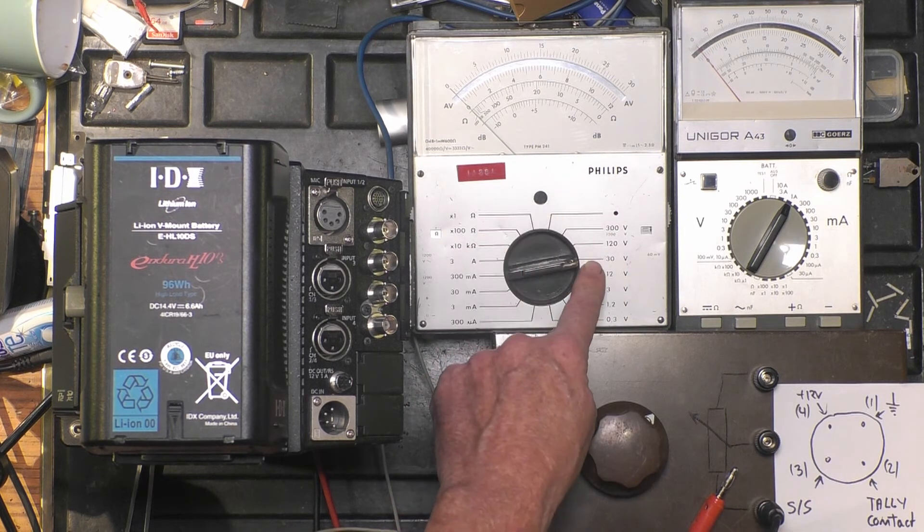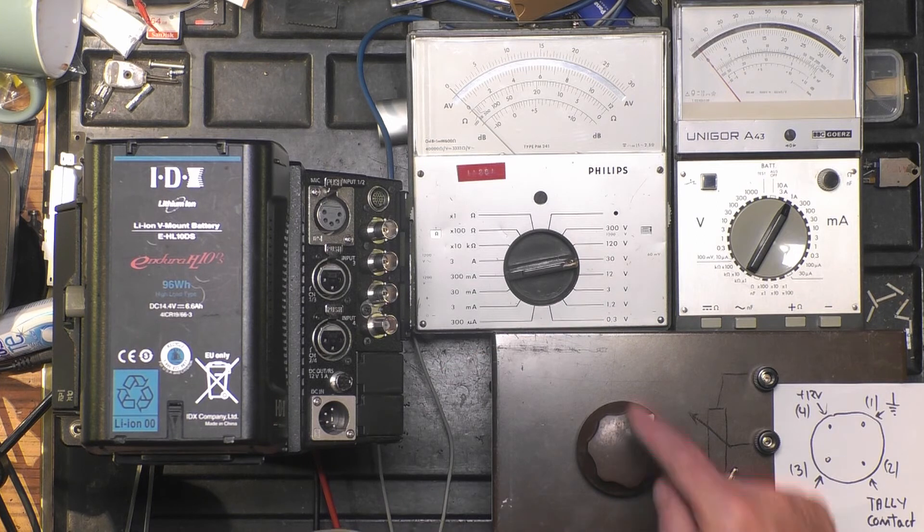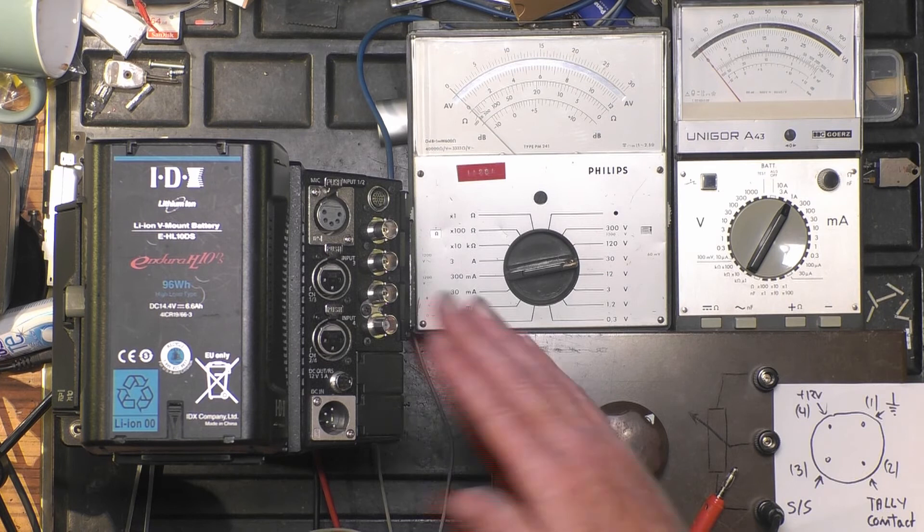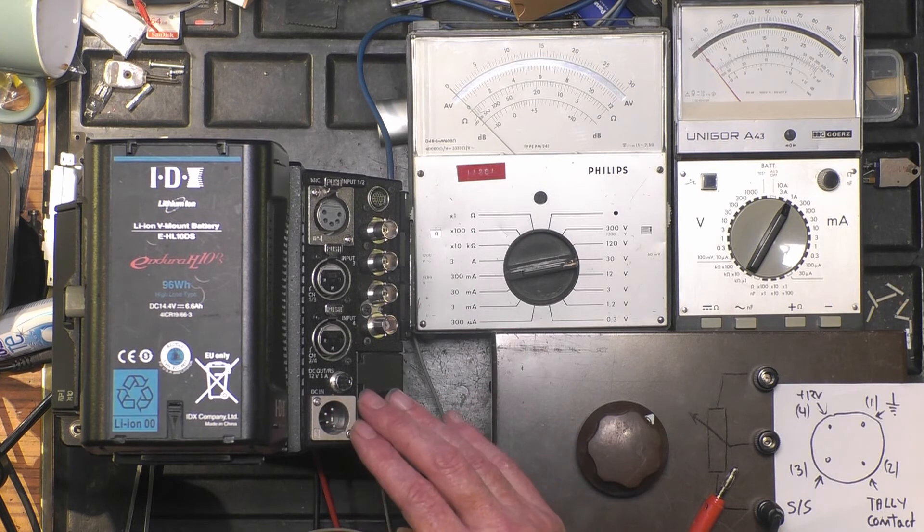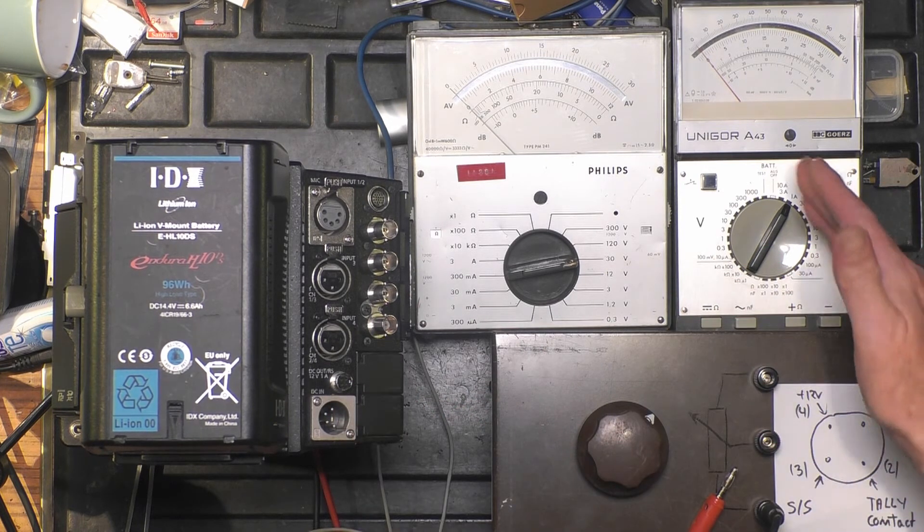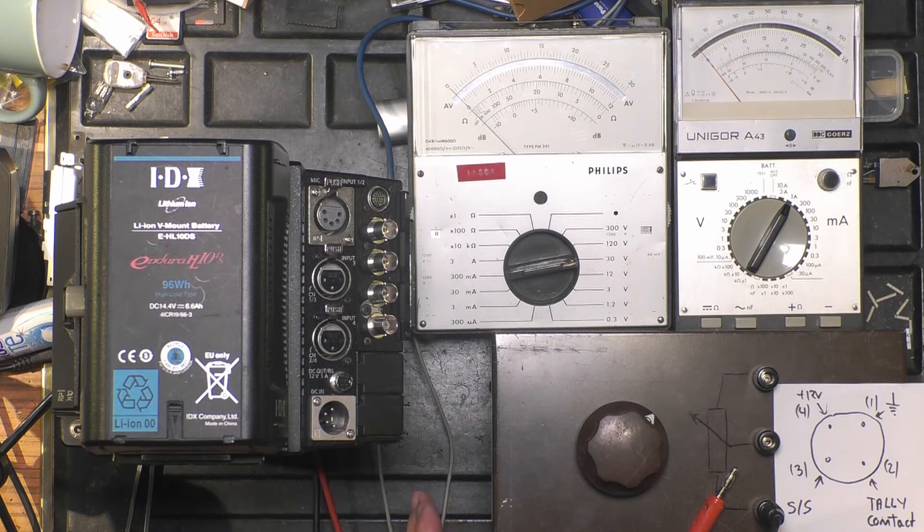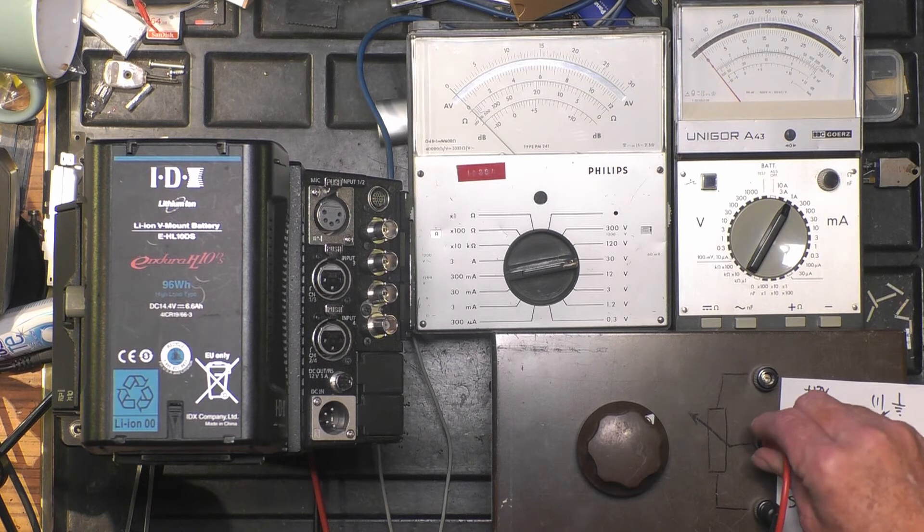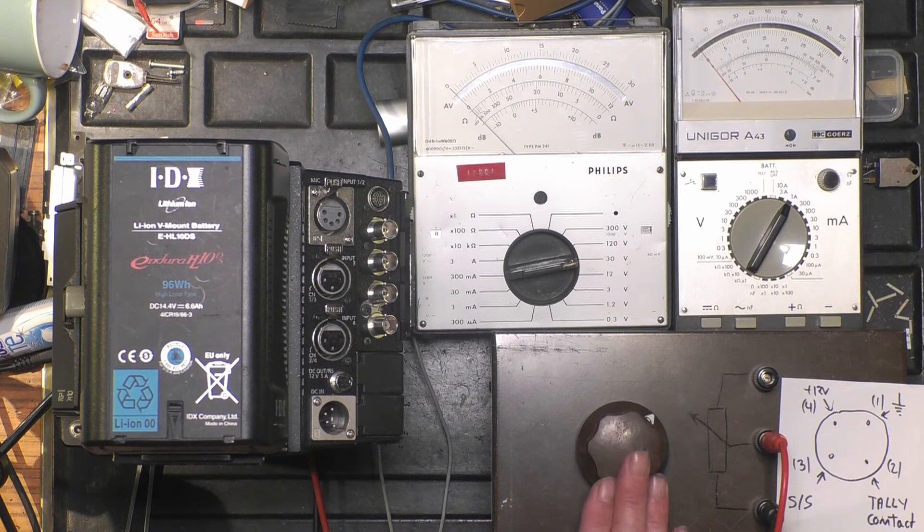We change from ohms to volts. I will use 30 volt, so the needle should come about halfway. And I also want to load this 12 volt a little bit, so I have an amp meter and load here. This is basically a big resistor that I can adjust, so I can adjust from 350 ohms to zero ohms, and it can easily take one amp.